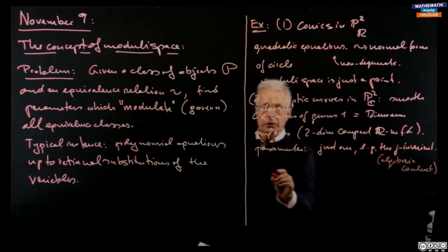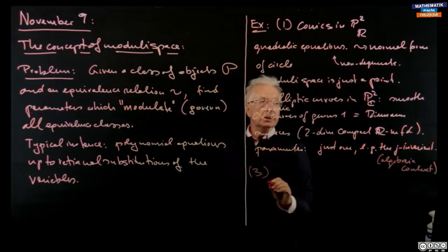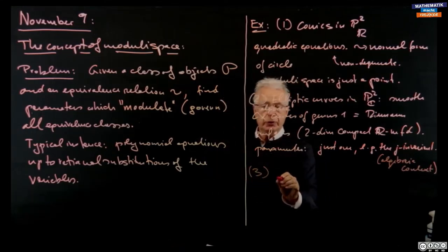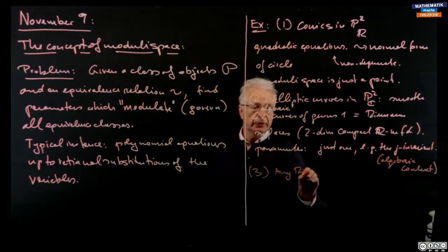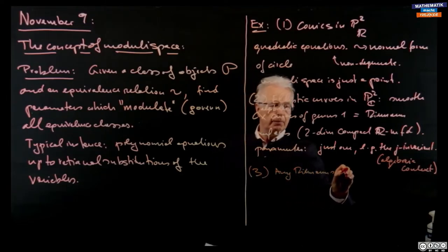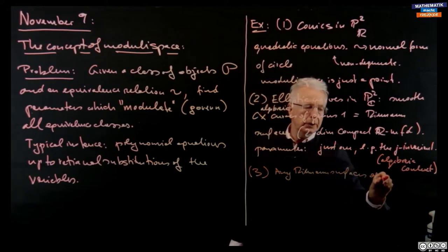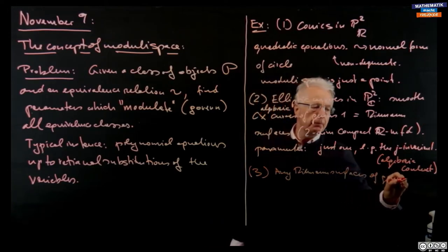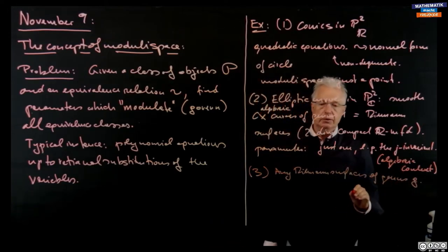We have already seen that there is just one parameter, and this could be — it's not unique — for example the j-invariant. Now if you take the j-invariant and vary it, the natural question is: how do the elliptic curves change? Do they change in a continuous way? This would be the algebraic context.